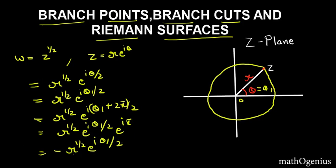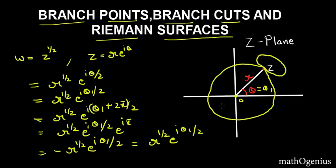At the same point, w has two different values when rotated. If we make another rotation, we get the same value back. So we can say there is a branch point at the origin O. The branch point is a point around which, if we make a rotation, our function changes its value at the same point. One complete rotation around the origin changes our function from one value to another.